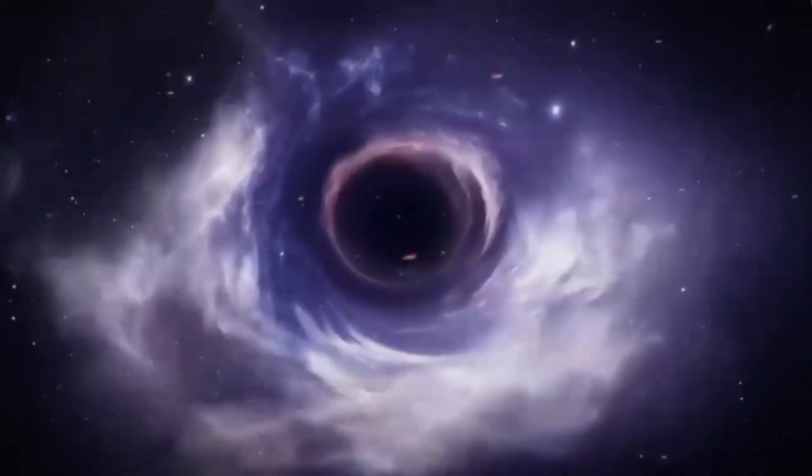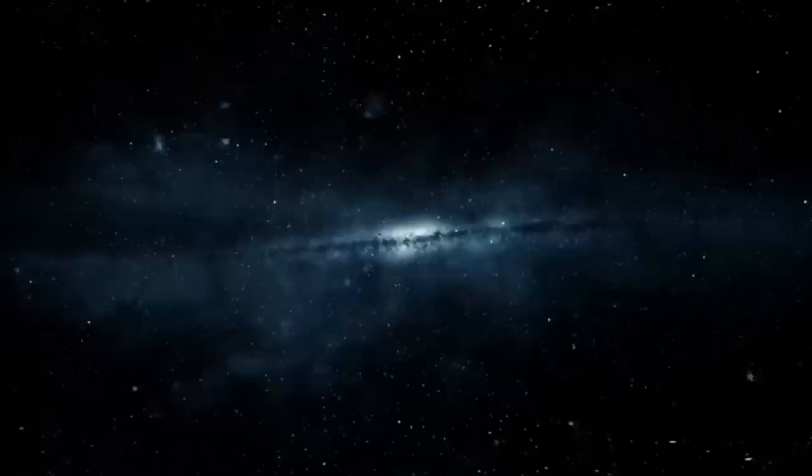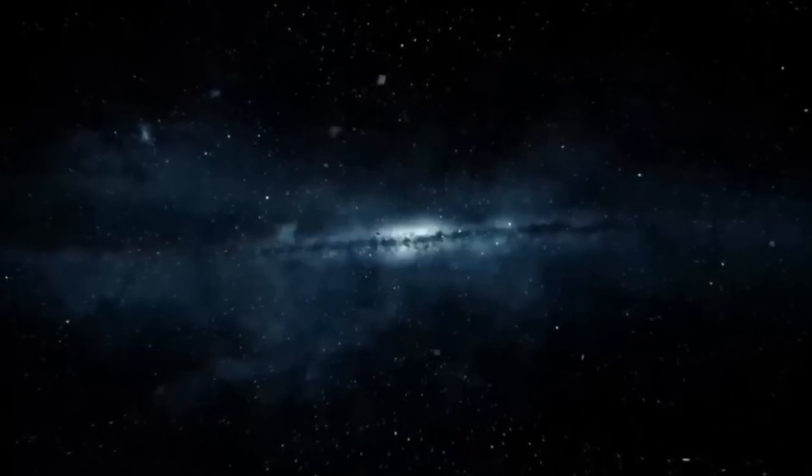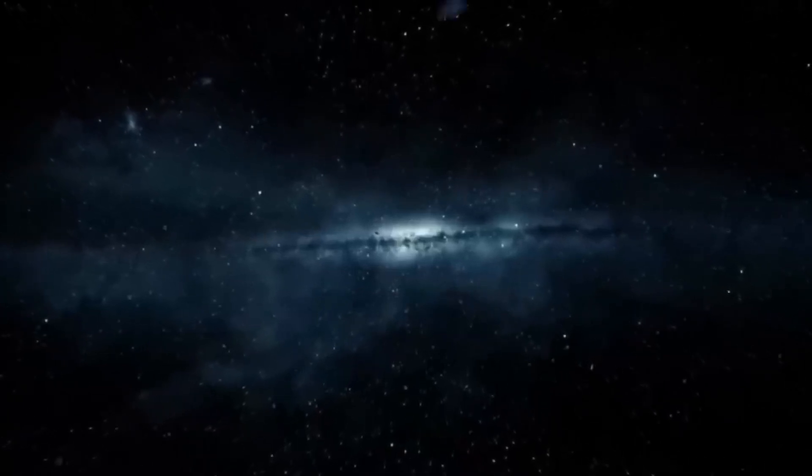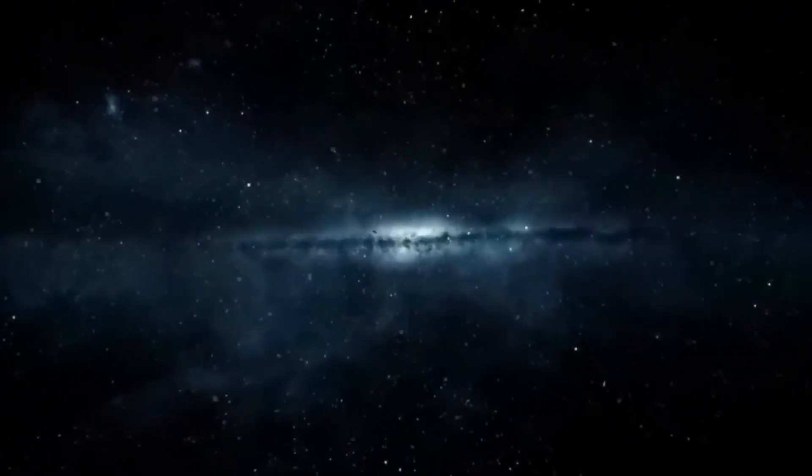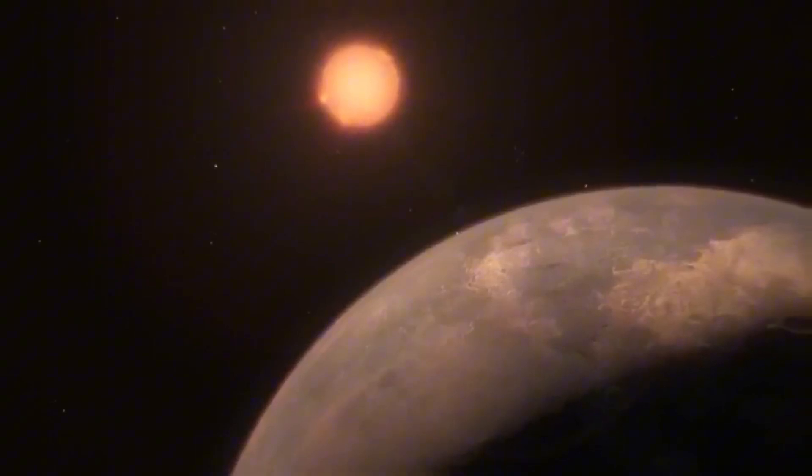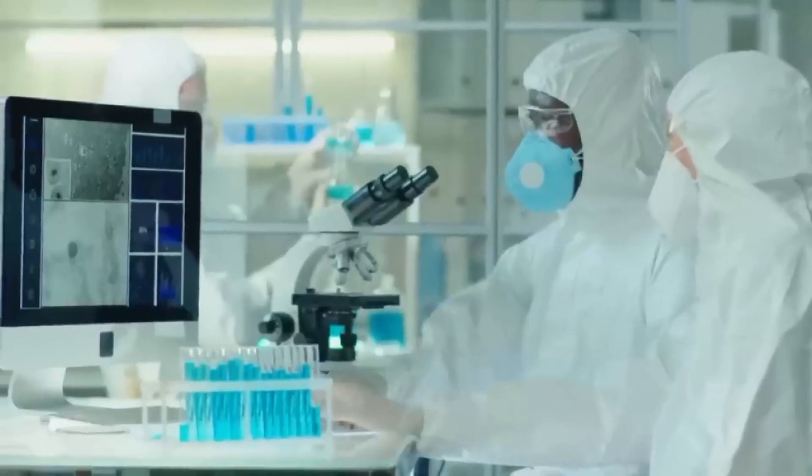The James Webb Space Telescope, the crown jewel of modern space exploration, has just delivered the clearest and most detailed image ever captured of Proxima b, an exoplanet orbiting the star closest to our sun, Proxima Centauri.